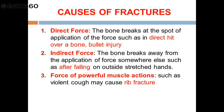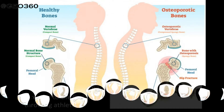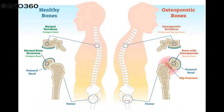Muscular force fractures occur due to violent contraction of a group of muscles. For example, a fracture of ribs can occur during violent coughing. This type of fracture happens very rarely and is mostly related to other underlying diseases like weakened bone structure.